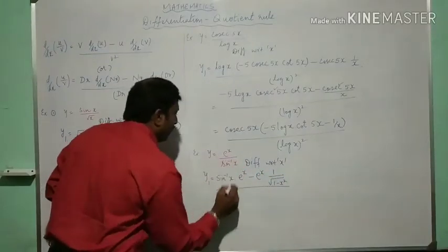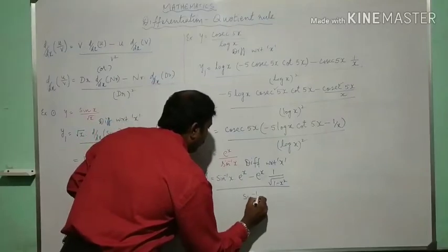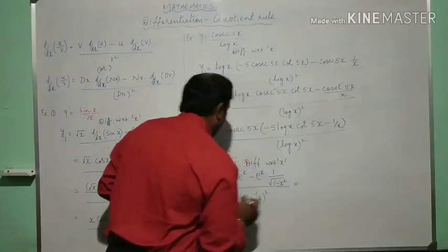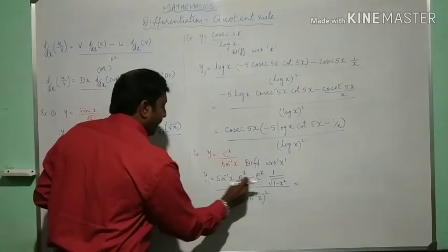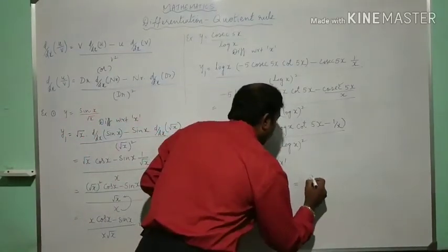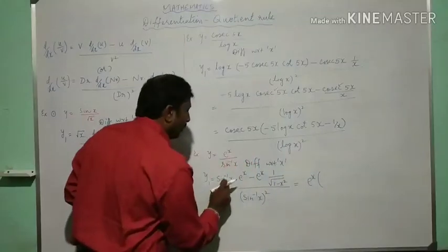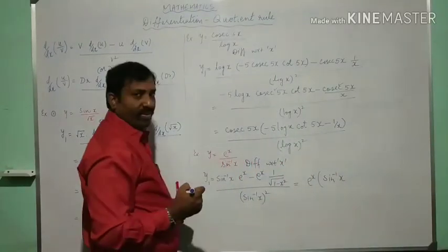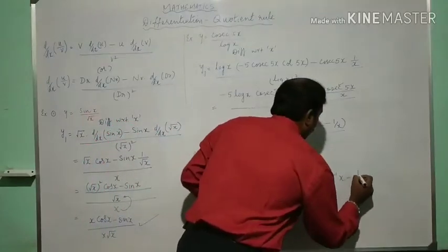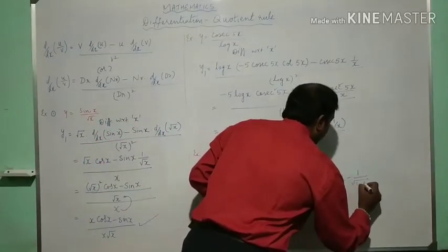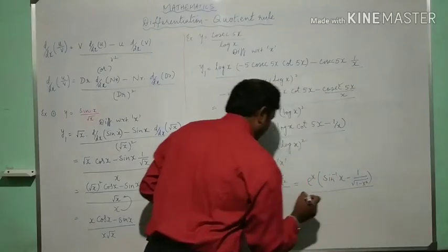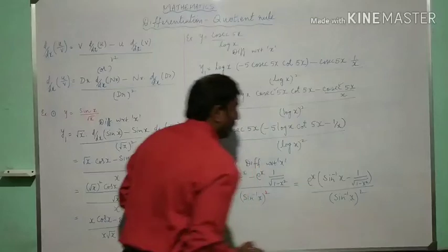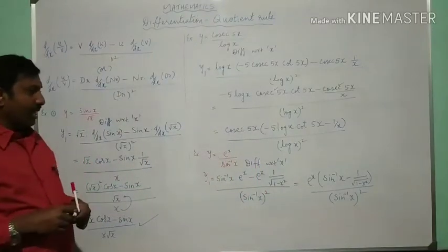Just you can take e power x common. E power x, the denominator part is sin inverse x, minus 1 by root of 1 minus x square, divided by sin inverse x all square. That is the answer.